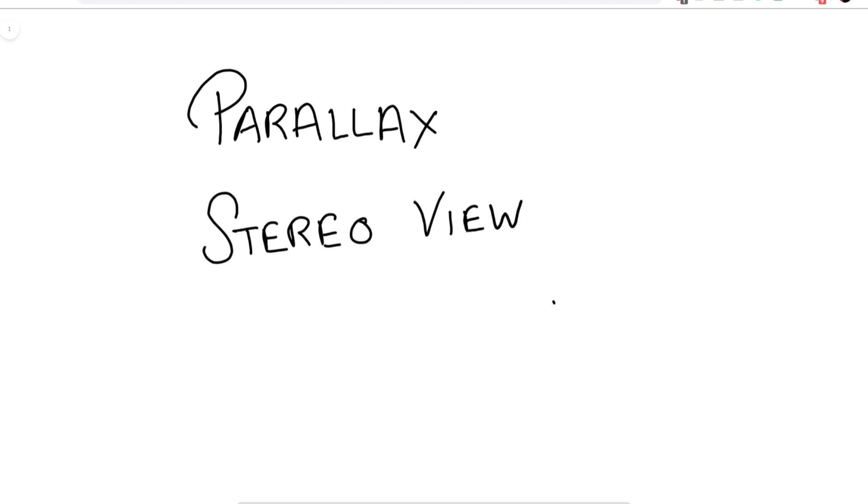To do that, we first have to understand the concept of parallax and the concept of stereo views. So let's start by understanding the concept of parallax. To do that, let's consider two cameras: camera one and camera two.